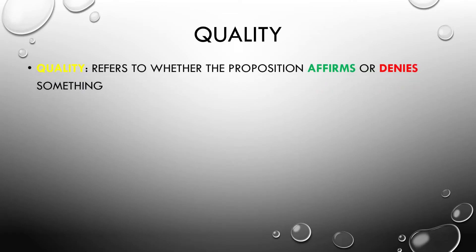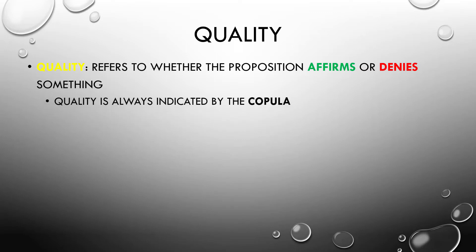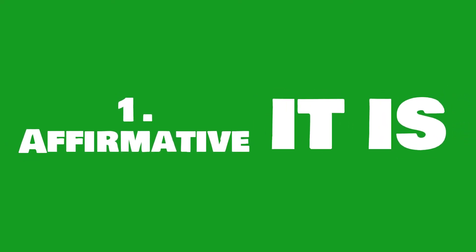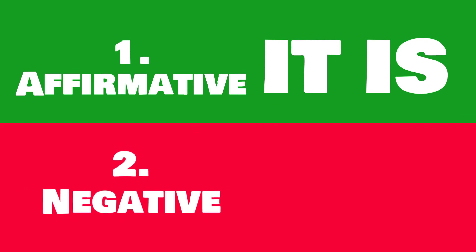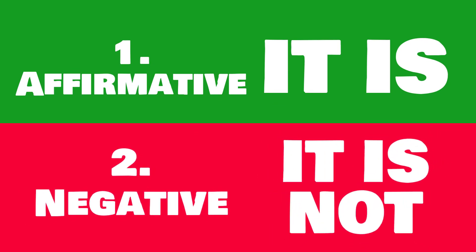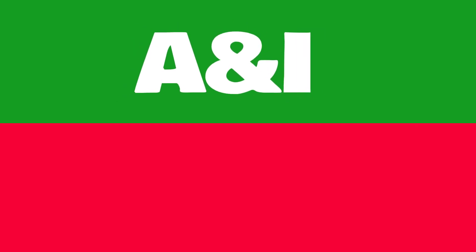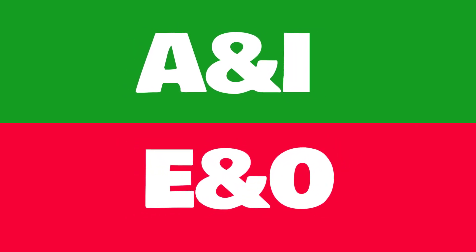All categorical propositions have both quality and quantity. When we speak about quality, we're referring to whether the proposition affirms or denies something — it has to do one or the other, and it's always indicated by the copula. There are only two possible qualities: affirmative — affirming something, saying it is the case — and negative — denying something, saying it is not the case. A and I have an affirmative quality; E and O have a negative quality.